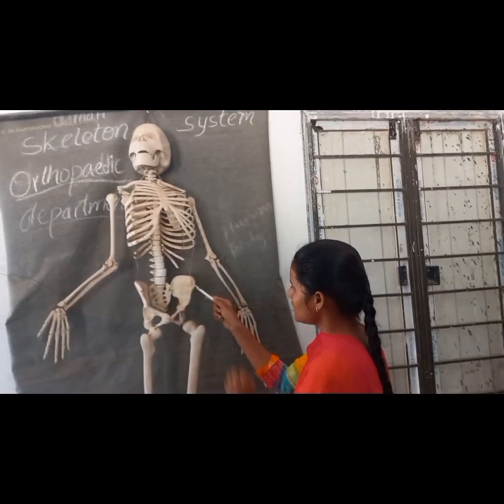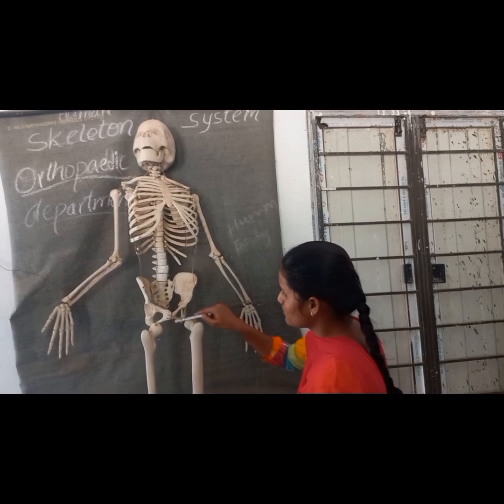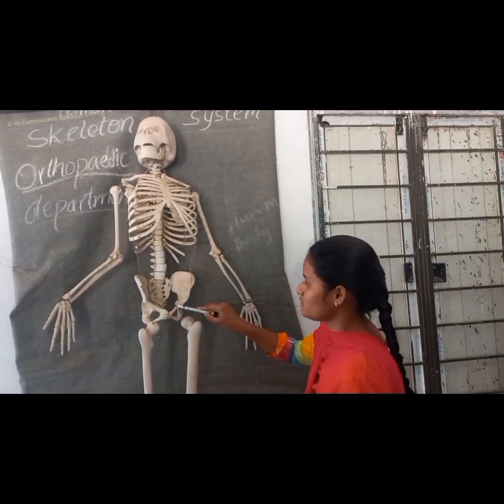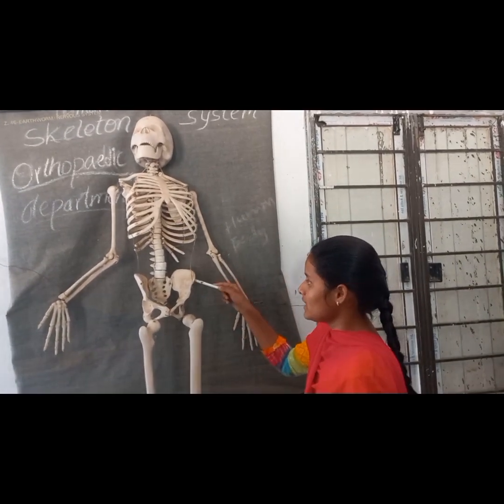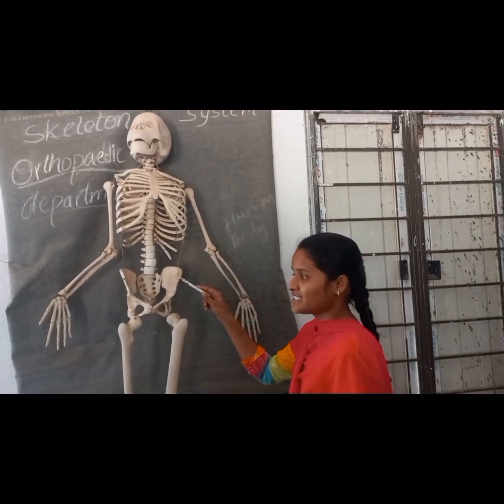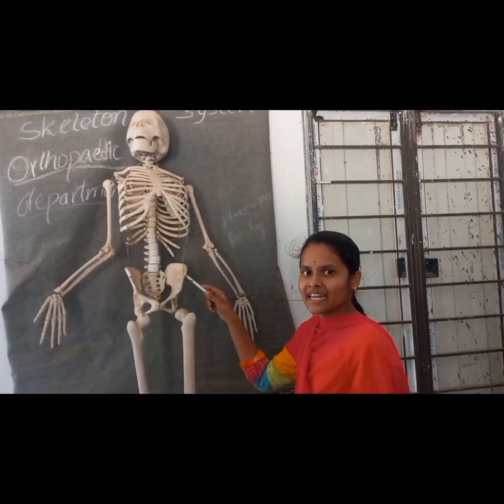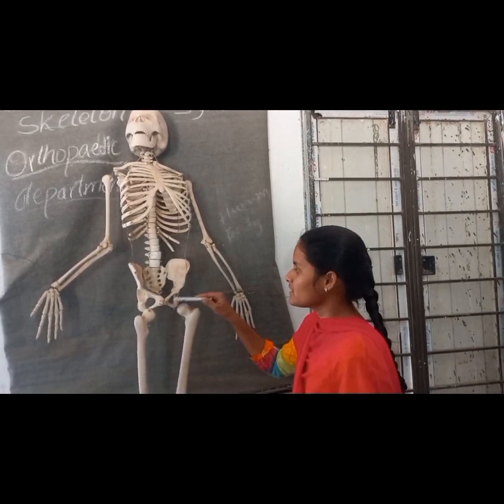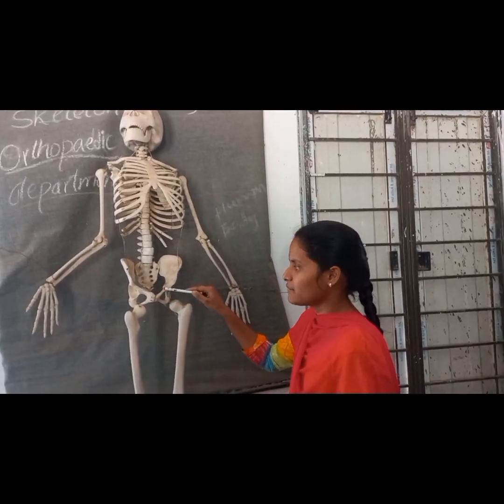This is the ilium. This is the pubis. This is the ischium. This is the ischium bone. Ilium bone. This is the pubis. This is the ischium bone.